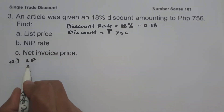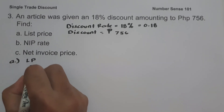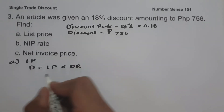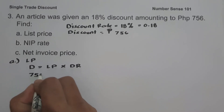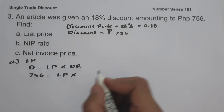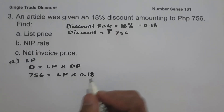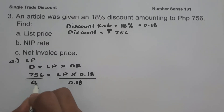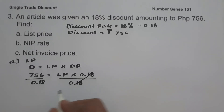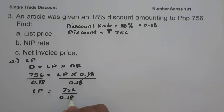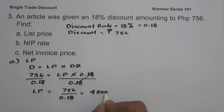On letter A, we are looking for the list price. Using the formula: discount equals list price times discount rate, we have seven hundred fifty-six equals list price times zero point eighteen. Dividing both sides by zero point eighteen, the list price equals seven hundred fifty-six divided by zero point eighteen, which is four thousand two hundred pesos. This is our list price.